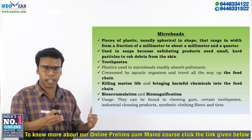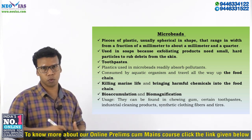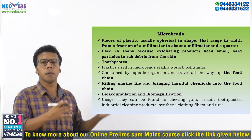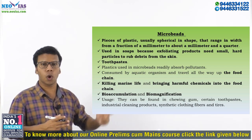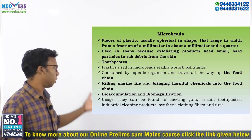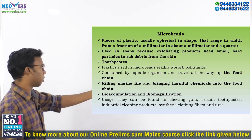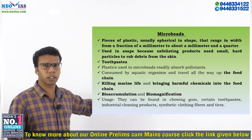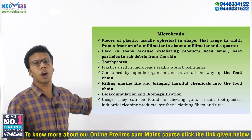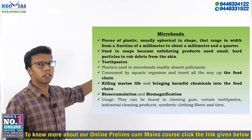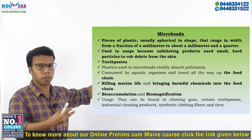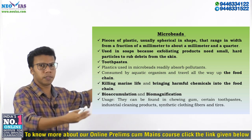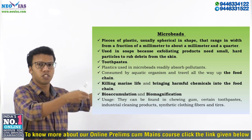Microplastics will undergo bioaccumulation as well as biomagnification. Microbeads along with chemicals will undergo biomagnification and bioaccumulation. These microbeads are also used in chewing gums, certain toothpastes, industrial cleaning products, synthetic clothing fibers, and tires. Ultimately, through bioaccumulation and biomagnification, the impact on the ecosystem and food chain will even reach humans.